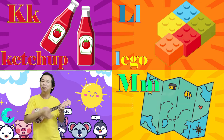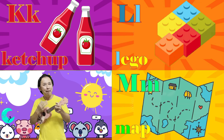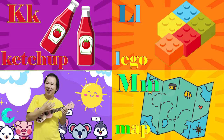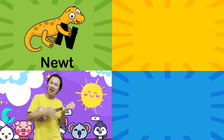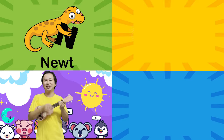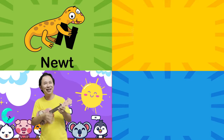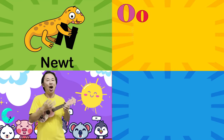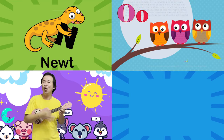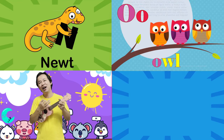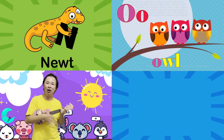M is for map, muh. N is for newt, n. O is for owl, ah.